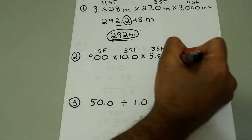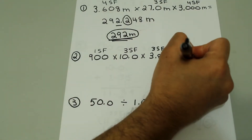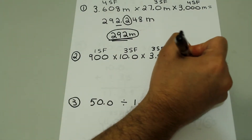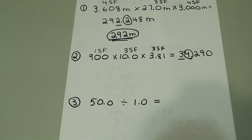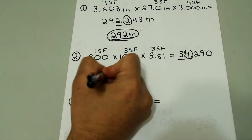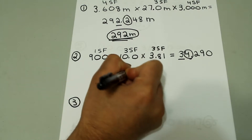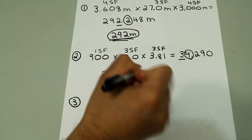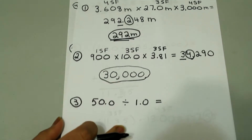So the final answer should only have one significant figure. That's going to be at the 3. The number to the right tells us if we should round up or down, and since the 4 is less than 5 we round down. So the final answer would be 30,000.